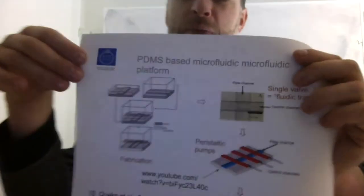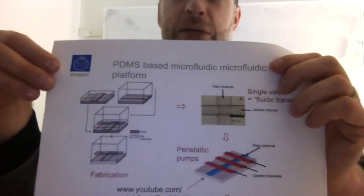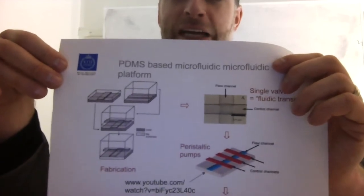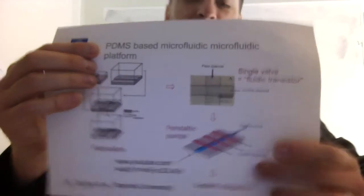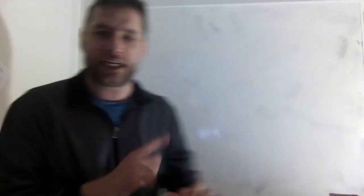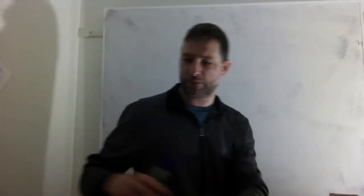So now I have a valve. I put pressure, it's closed. If I release the pressure, it's open. What I can now do is put three of those in a row, and then I call that a peristaltic pump if I pump it correctly. And I'm going to try to make a sketch here on the whiteboard to explain how that works, the peristaltic pump.